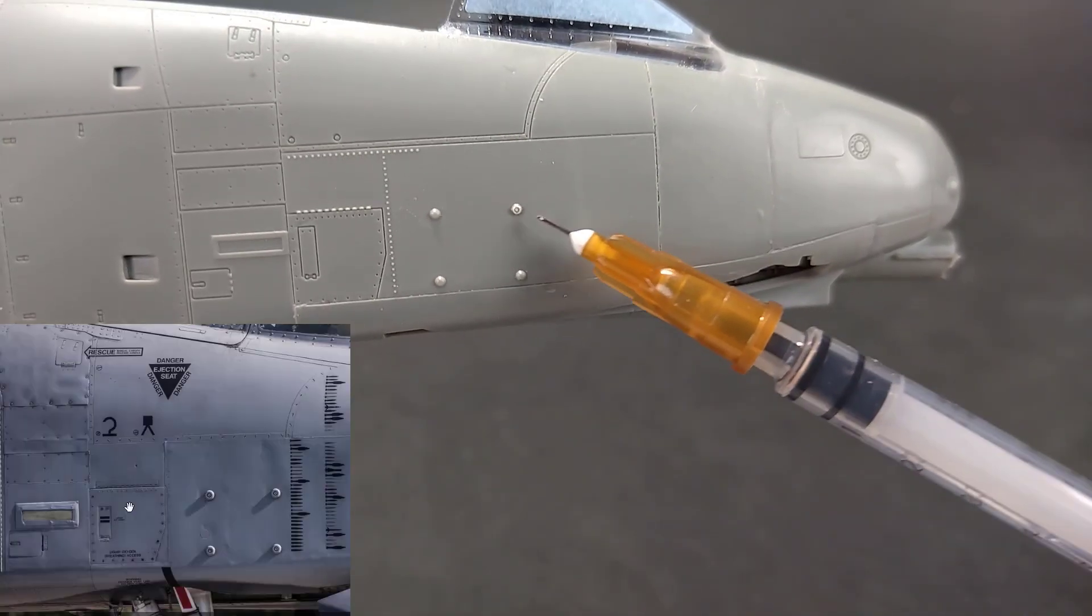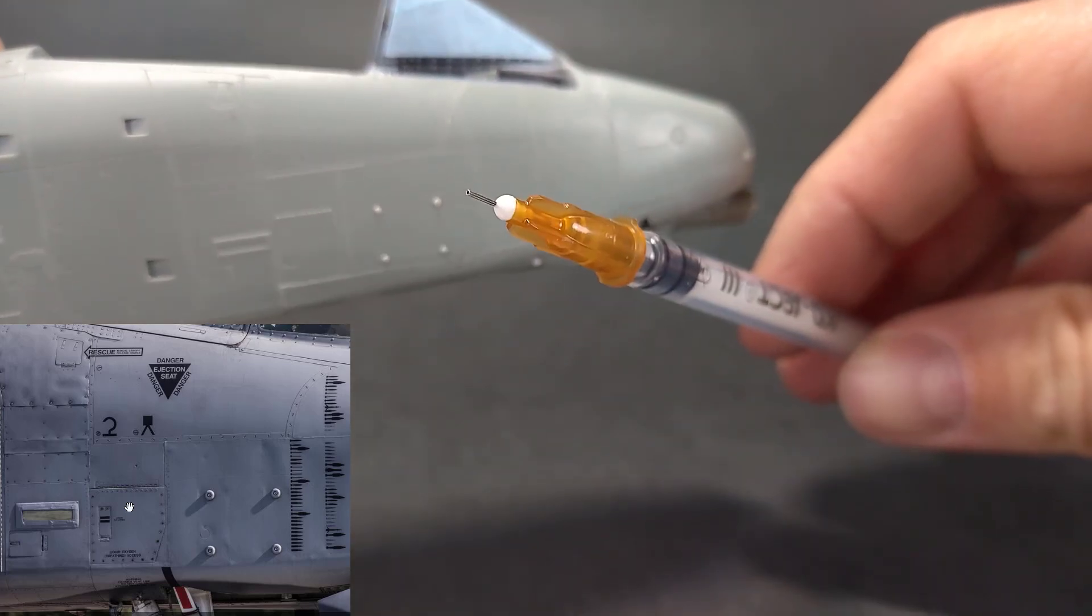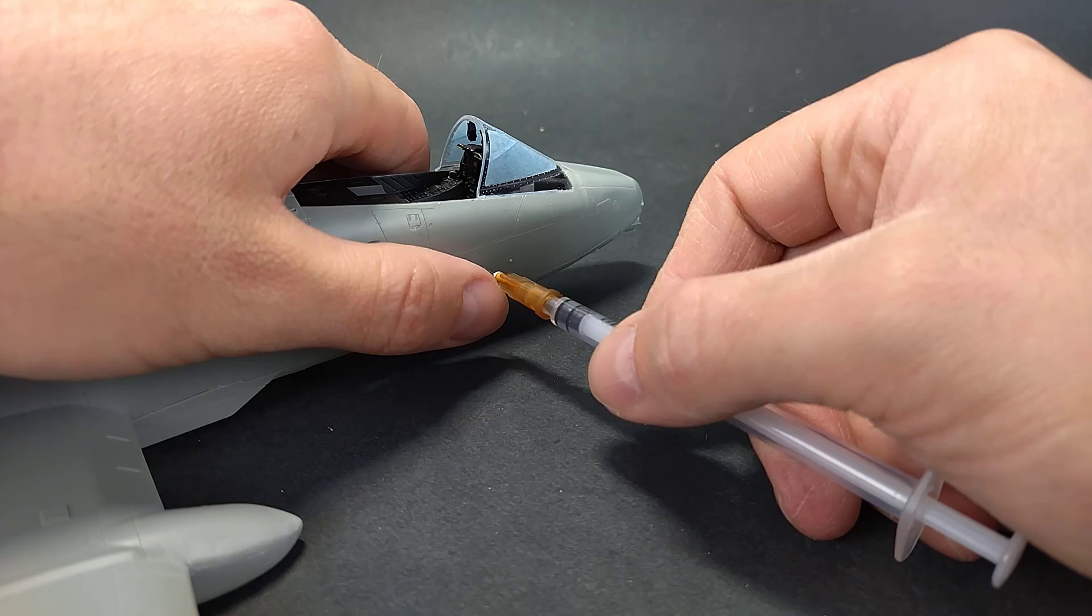These four dots are remains of the pave penny sensor mount that was used in the older versions. To make them look more realistic I use a needle.